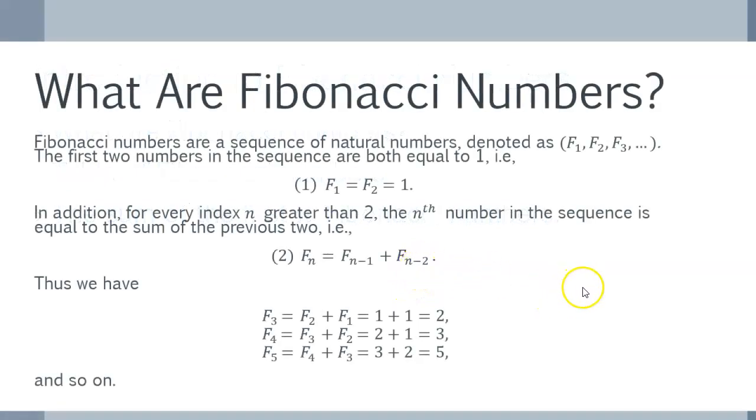What are Fibonacci numbers? Fibonacci numbers are a sequence of natural numbers, which we denote as F1, F2, F3, and so on. First two numbers in the sequence are both defined to be equal to 1, so we have F1 equals F2 equals 1, and in addition, for every index n greater than 2, the nth Fibonacci number is the sum of the previous two.